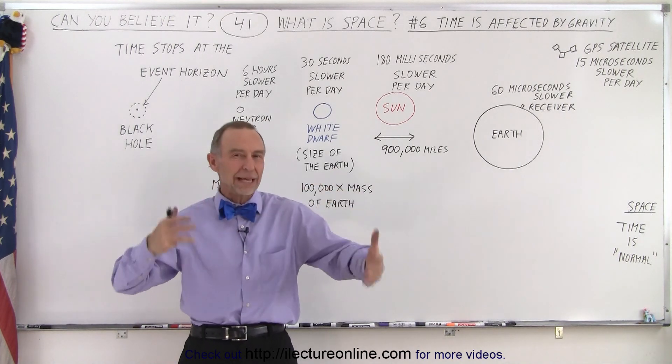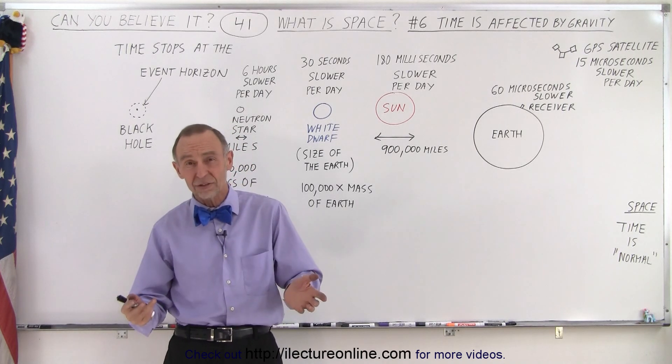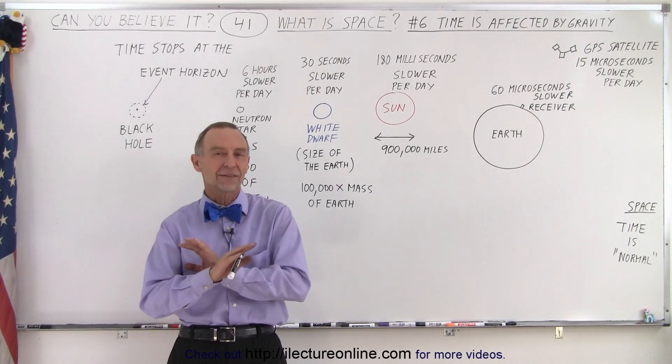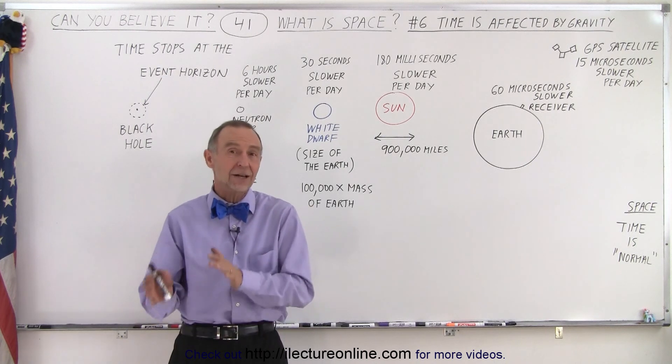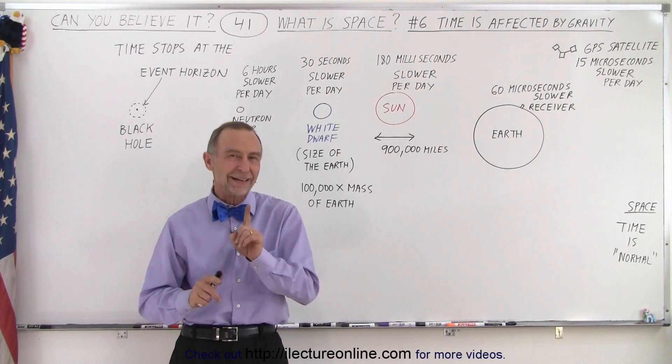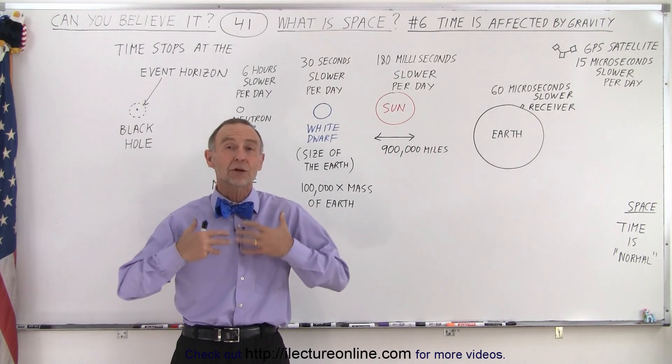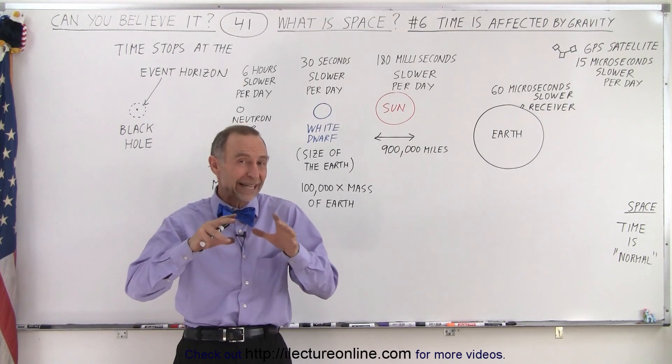Now when you're far away from any planets or moons or stars or galaxies, yes, then time seems to be a constant. Time progresses at a constant rate everywhere through space, except when you get to be close to a place where there is a gravitational field.